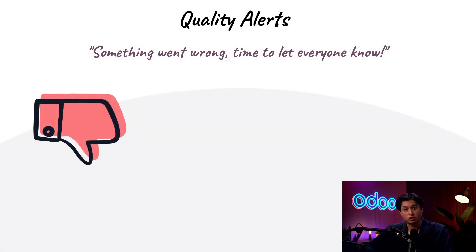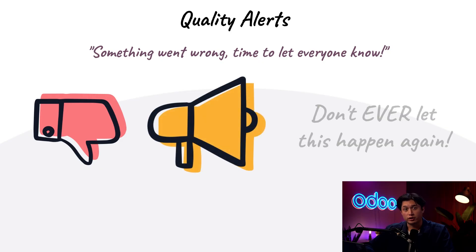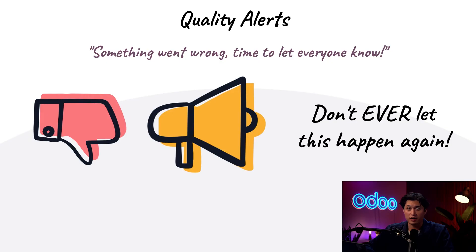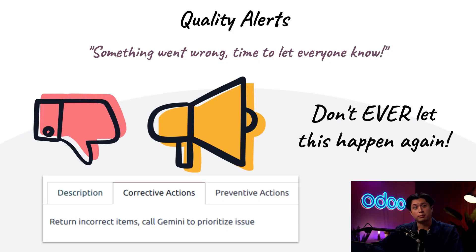Now let's discuss quality alerts. If a product fails a quality check, you'll need to notify the relevant teams — this is where you create a quality alert. Quality alerts are used to notify quality teams of product defects or other issues. They can be created directly from a manufacturing or inventory order, from a work order, in the shop floor module, or within the quality app itself. When creating a quality alert, employees also suggest corrective actions: how to fix the current issue, and preventative actions to ensure the issue doesn't occur again.